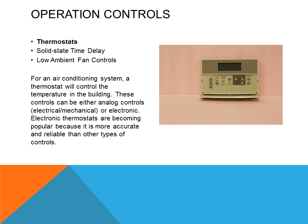For an air conditioning system, a thermostat will control the temperature in the building. These controls can be either analog, which is electromechanical, or electronic. Electronic thermostats are becoming popular because they are more accurate and reliable. One reason room thermostats are becoming digital is that they are not sensitive to levelness. The old type of thermostats that used mercury had to be perfectly level on the wall, and if they weren't, they were out of calibration.